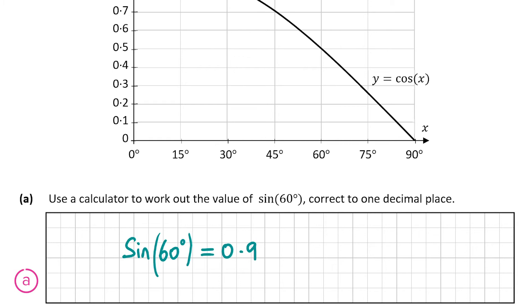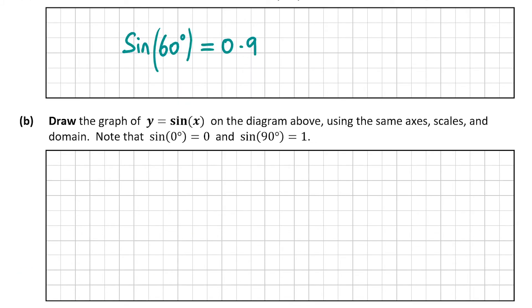Now let's have a look at part b of the question. It tells us to draw the graph of y equals sin(x) on the diagram above with the same axes, scales and domain. We're told that sin(0°) equals 0 and sin(90°) equals 1. So we have three points that will be on the function sin(x).